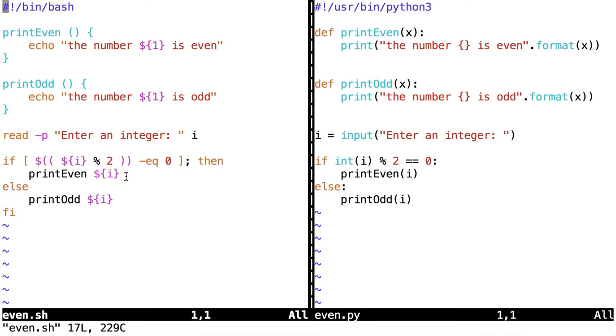Now let's talk about what we mean by call print even and call print odd. We're calling functions that we have defined up above the main part of our script here.